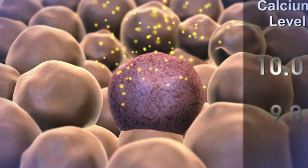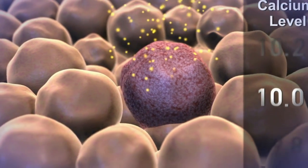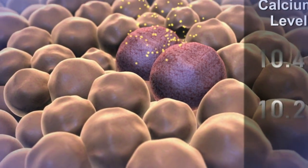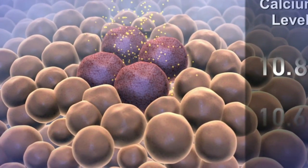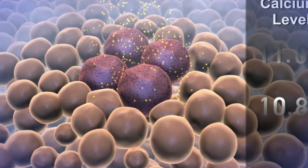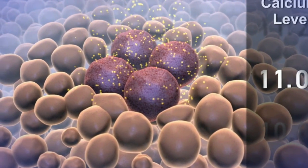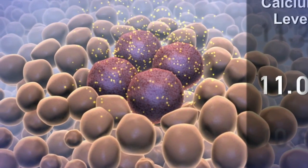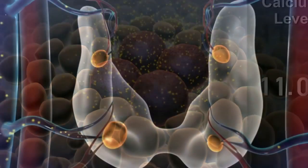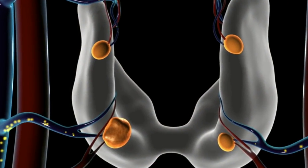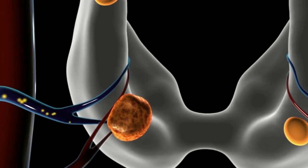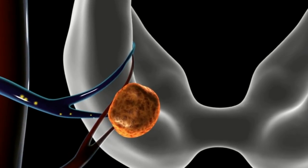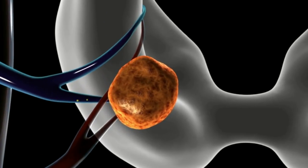Just like muscles, cells that work multiply and get bigger, while cells and glands that don't get smaller. Gradually in time, the calcium level increases until it reaches the set point of the abnormal parathyroid's thermostat setting. Because hyperparathyroidism is caused by the abnormality in the sensor, the high calcium level will continue as long as the abnormal parathyroid tissue is present.